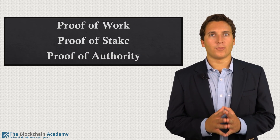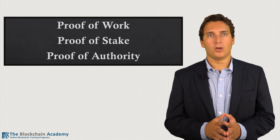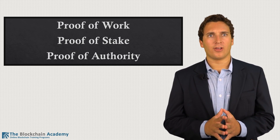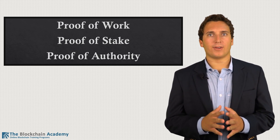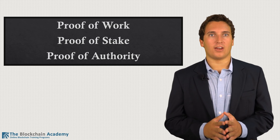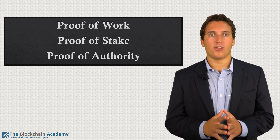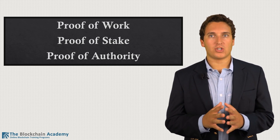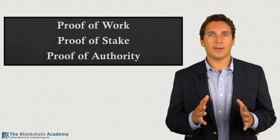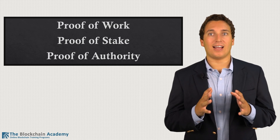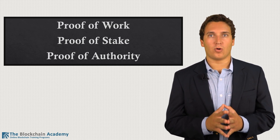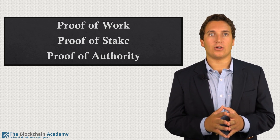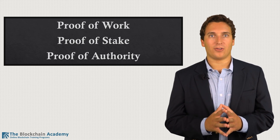This also relates to proof-of-authority, which is almost exclusively for private blockchains. In this verification system, a predetermined set of participants are given administrative control of the blockchain. This type of blockchain is ideal for a private enterprise rollout of an auditing blockchain or a blockchain built for regulators.